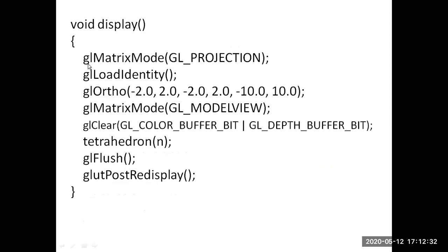In the display function, gl_matrix_mode is used to set the projection mode. gl_load_identity sets the matrix to the default identity matrix. gl_ortho is an orthogonal projection view plane specified with the coordinates xmin, ymin, xmax, ymax, and the near and far z planes — six parameter values are passed to gl_ortho. gl_matrix_mode then changes the mode from projection to model view. gl_clear clears the color buffer, and the depth buffer is also initialized with an initial z value.